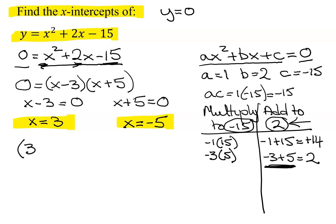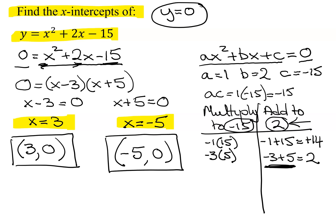The first one has the x-coordinate of 3. What's the y-coordinate? 0. So there's one of my x-intercepts, and what's the other one? Negative 5, 0. So there are my 2 x-intercepts.